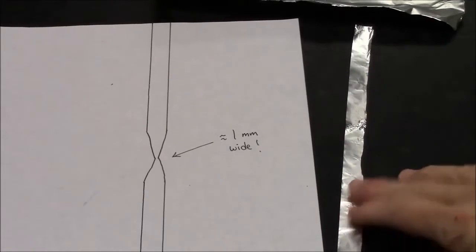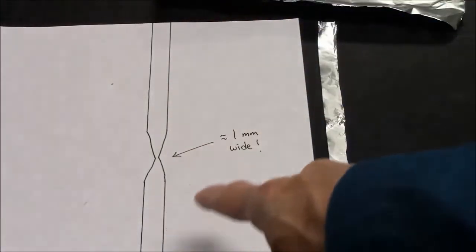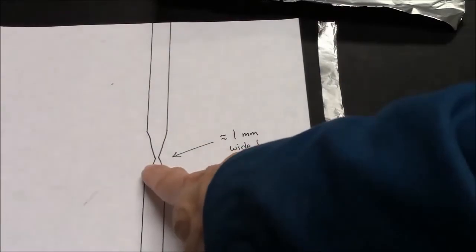Now I need to trim the aluminum foil to make a shape that looks like this. It's like an hourglass. It gets very thin here.